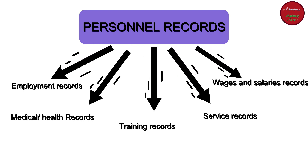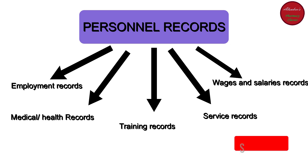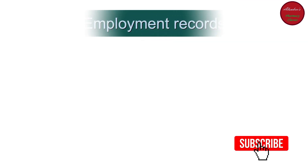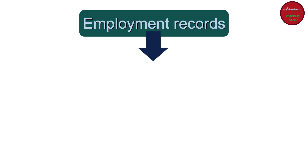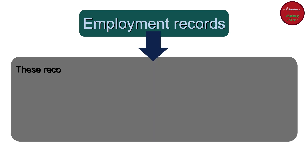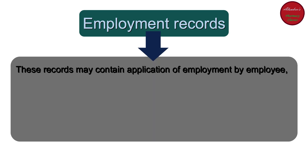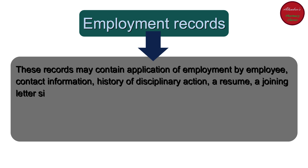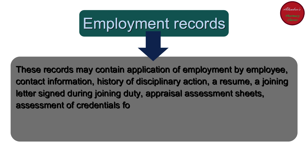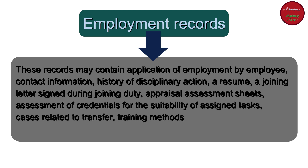There are basically five different types of personal records maintained in every kind of industry, including the pharmaceutical industry. The first type is employment records. These records may contain the application of employment, contact information, history of disciplinary action, and a joining letter signed by the employee during joining of duty.